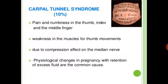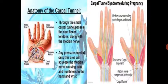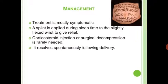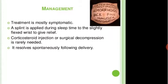Carpal tunnel syndrome also causes weakness in the muscles of thumb movement due to compression of the median nerve. Physiological changes in pregnancy with retention of excessive fluid are a common cause. Treatment is mostly symptomatic; a splint is applied during sleep to the slightly flexed wrist to give relief. Corticosteroid injection or surgical decompression is rarely needed. It resolves spontaneously following delivery.